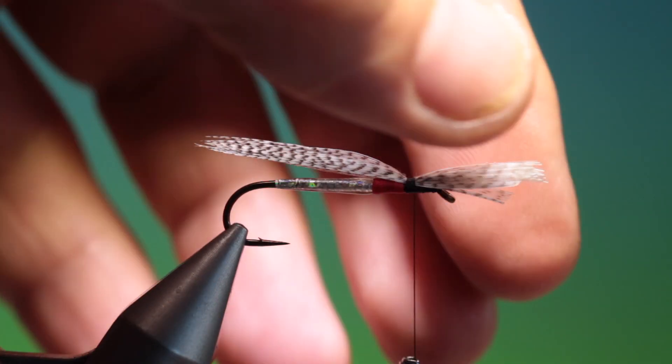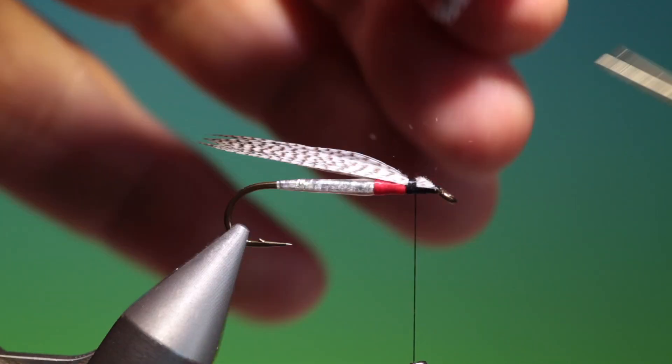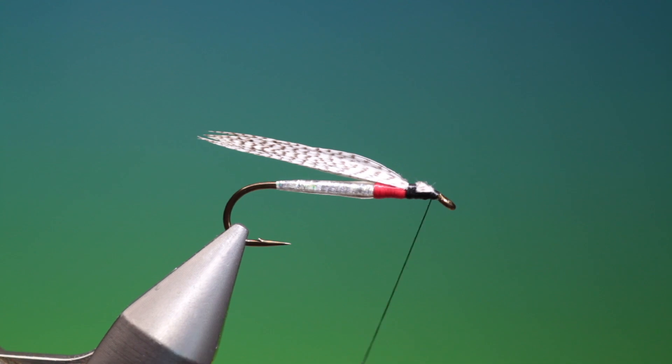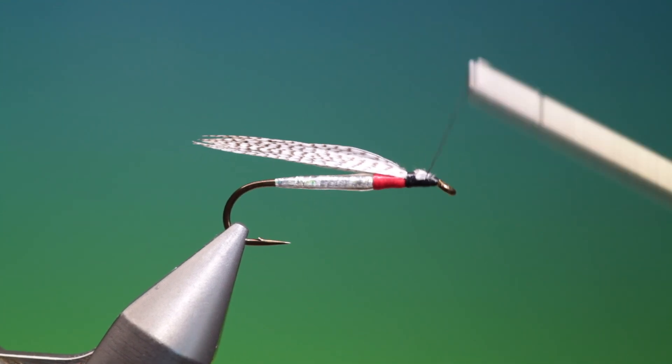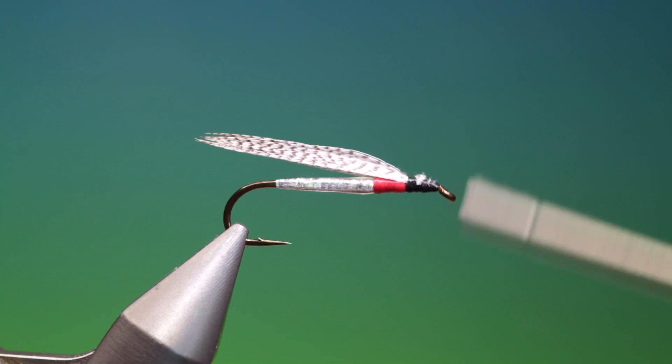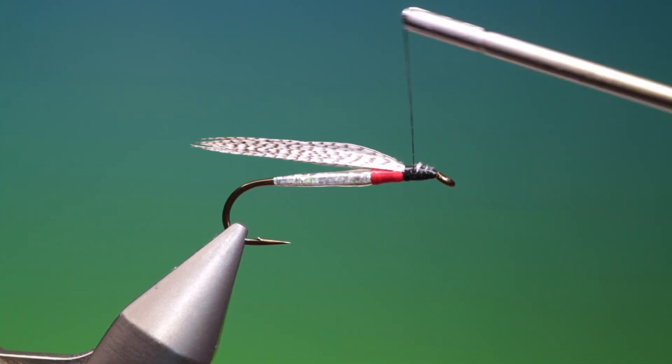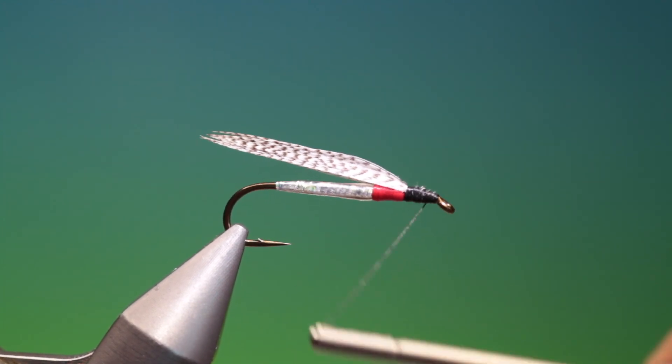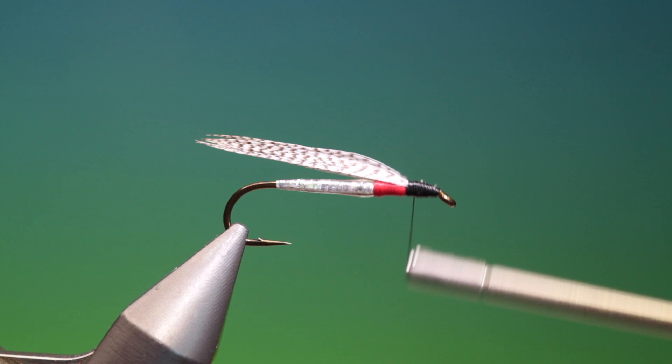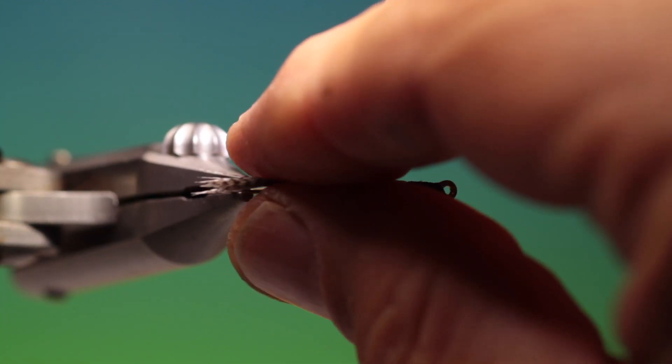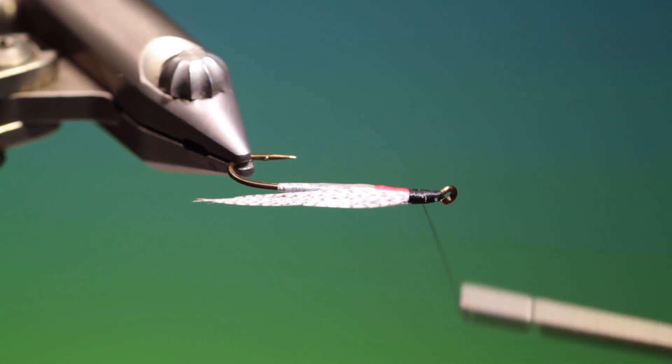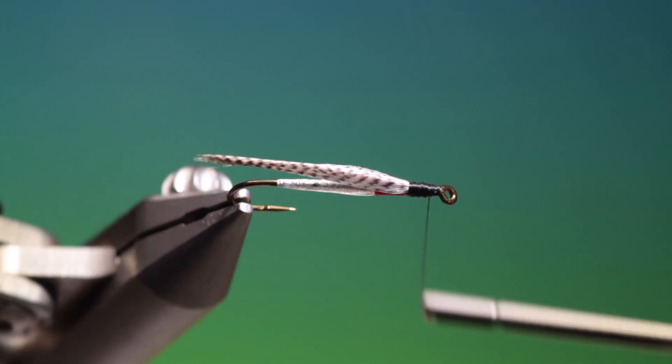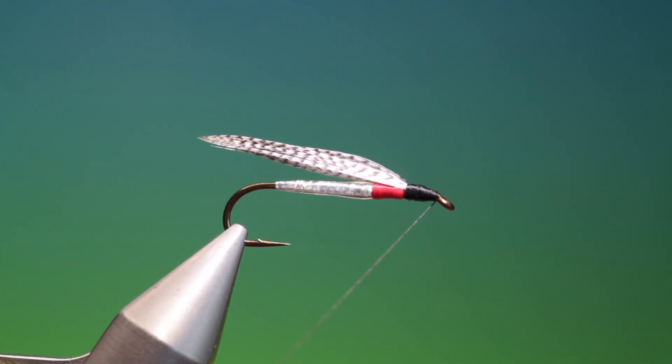Then we need our scissors. I'll trim that off at an angle. We start at the hook eye. Work our way up over the trimmed ends. Make sure you cover them all so you get a very dense black head. This is good. Make sure you've got the black head on the other side as well that you've not missed any. There we go. That's perfect.